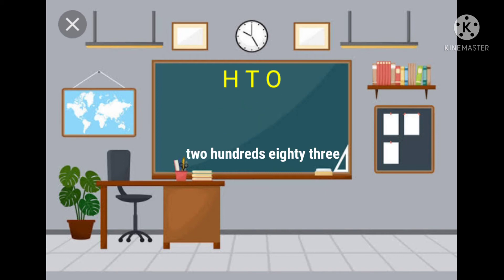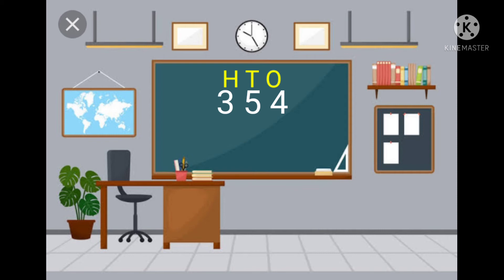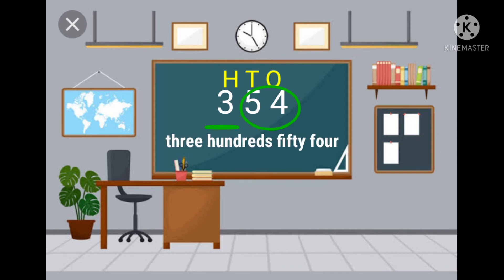Next, here three is in the hundreds place, five is in the tens place, and four is in the ones place. Children, we read the hundreds first: three hundreds. Then read the last two digits together: fifty-four. Three hundreds, fifty-four.